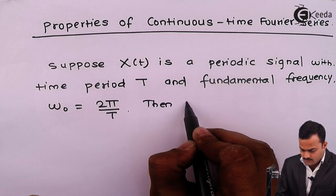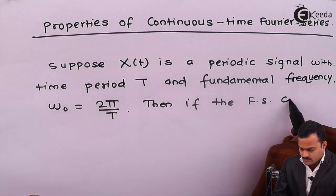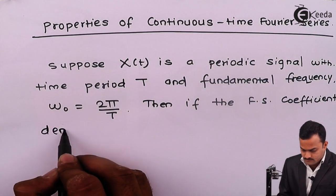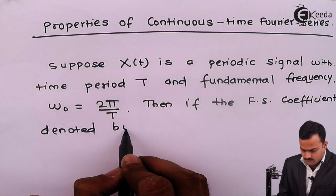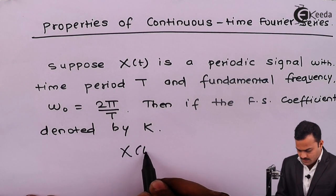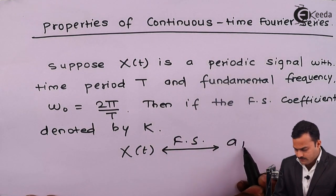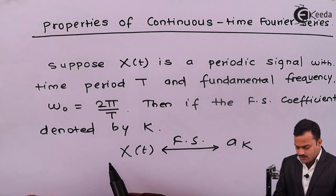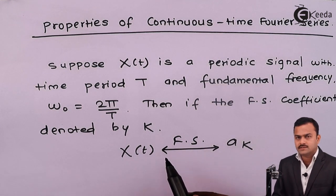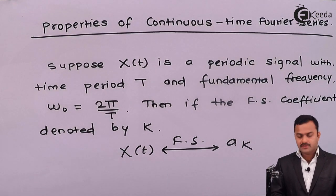Then, if the Fourier series coefficient is denoted by k, we will use a notation: x of t, if we apply a Fourier series, it will give a Fourier series coefficient ak. So this notation will tell the relationship between x of t and ak through a Fourier series. With respect to this, let's define its properties one by one, starting with the first property: linearity.